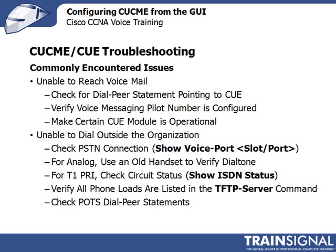With show ISDN status you'll see something that says physical layer active or deactivated — if it says deactivated, that's a good sign there may be a problem. You can also look at layer 2 and look for something that says TEI assigned; make sure that's working correctly. Make sure all phone loads are listed in the TFTP server command, and make sure your dial peer statements for POTS outbound are correct.